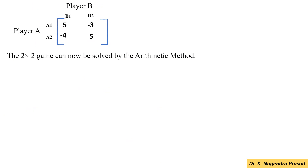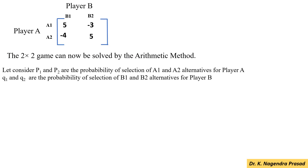This 2 by 2 game can be solved by the arithmetic method. Let us consider P1 and P2 as the probabilities of selection of the 1st and 2nd strategies of player A. And Q1 and Q2 are the probabilities of selection of strategies 1 and 2 for player B.